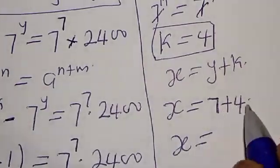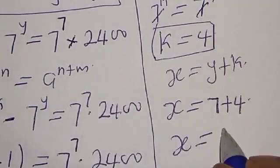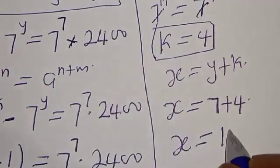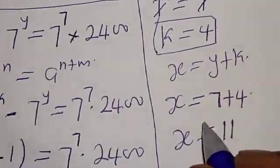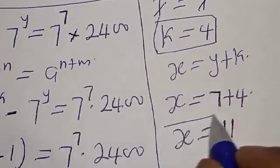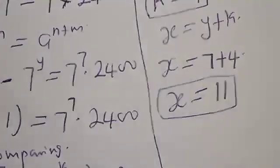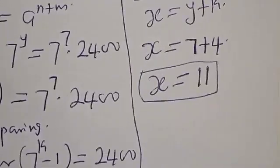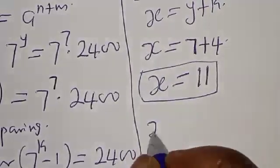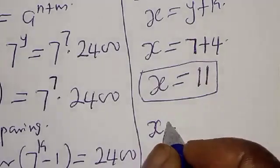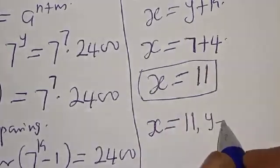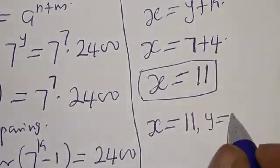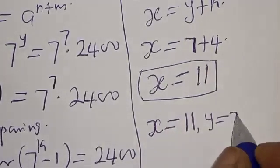Therefore x equals y plus k, which is 7 plus 4, giving x equal to 11. Our final answer is x equal to 11 and y equal to 7.